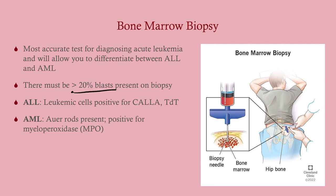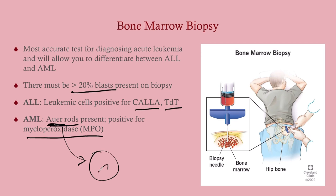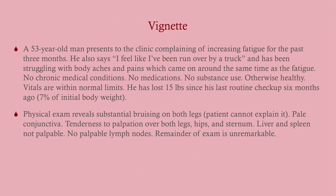On bone marrow biopsy, you need more than 20% blasts to diagnose acute leukemia. In ALL, cells stain positive for CALLA and TdT. In AML, you'll often see Auer rods and myeloperoxidase positivity. Auer rods are tiny rod-like structures inside the cancerous cells, full of granules that activate the coagulation system — so a patient with abundant Auer rods is at high risk for developing DIC.